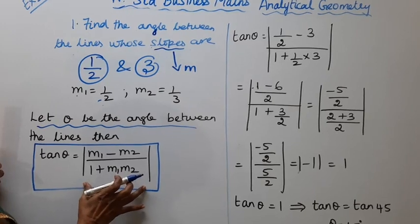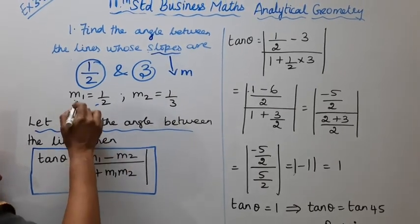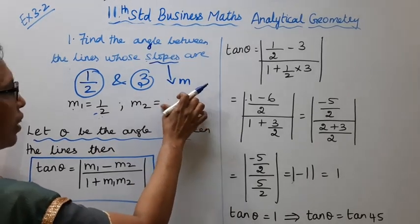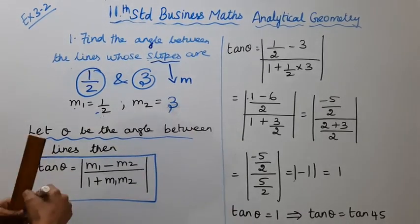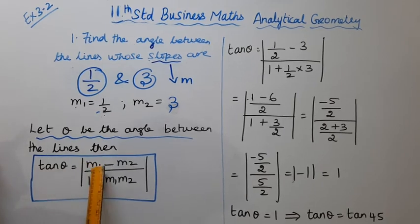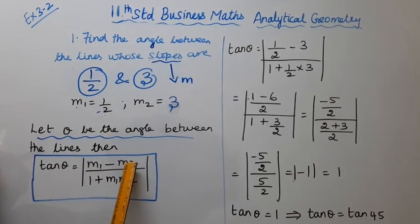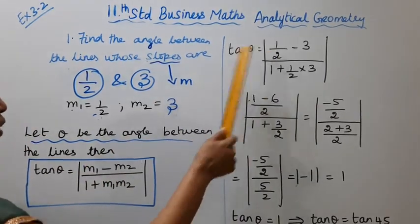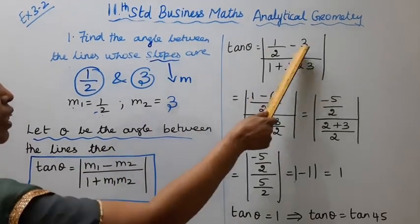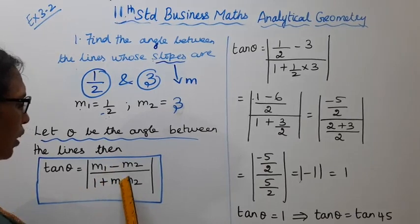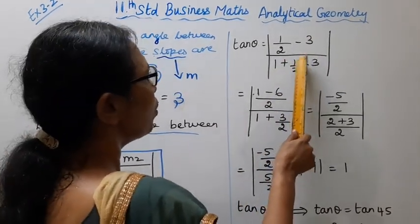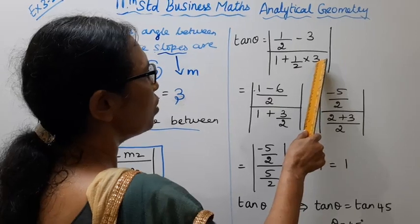In the formula, M1 is 1 by 2, M2 is 3. Substitute in the formula: Tan theta equal to M1, 1 by 2, minus M2, 3, divided by 1 plus M1 M2.